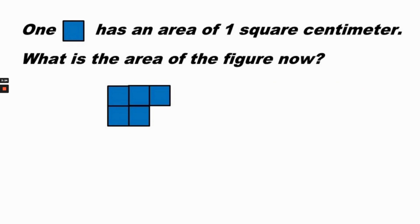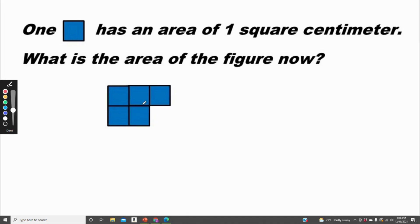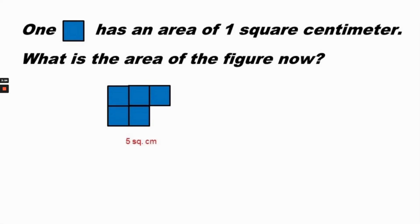One square has an area of one square centimeter. What is the area of the figure now? It looks like one square was taken out, so now there are one, two, three, four, five squares. The area would be five square centimeters.